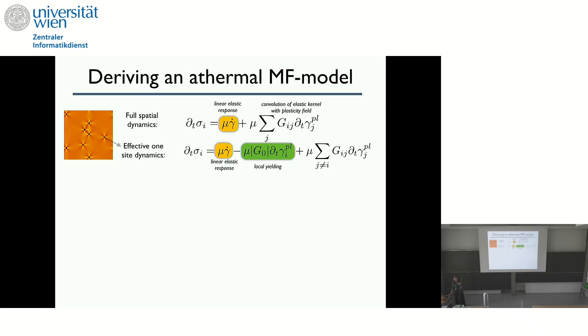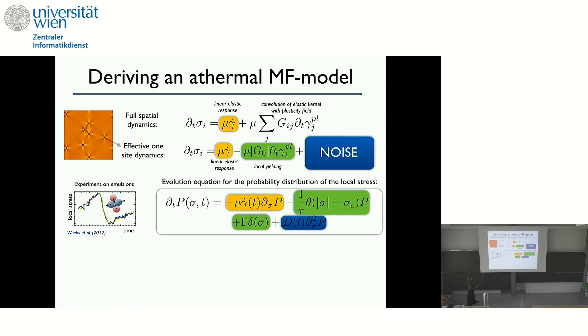So then you can also derive a mean field version of this. This will be the last slide with model equations. So if you want to derive a mean field model from these elastoplastic dynamics, what you can do is write down effective one-site dynamics. So you write down the evolution of the local stress, which will evolve with this linear elastic response, and then the convolution with the Eshelby kernel. And this you can split into the local yielding and the influence of all the other sites. And then the mean field approach, you can model the influence of all the other sites just by a noise. And so this is the approach of Hebraud-Lequeux.